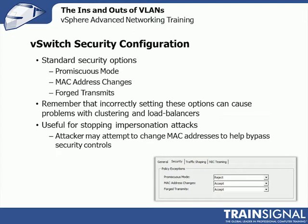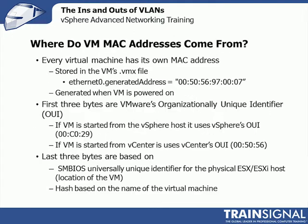I usually recommend — and VMware recommends, and most auditors will recommend — that you set all these to reject across the board. Then if you do have something that needs them enabled, like a load balancer or Microsoft clustering, create a port group just for those use cases and attach only the VMs that need it to that port group. Don't make it a system-wide setting. They are useful for stopping impersonation attacks and getting around security controls. So normally set them all to reject unless you absolutely need them. Also worth noting: where do VM MAC addresses come from?